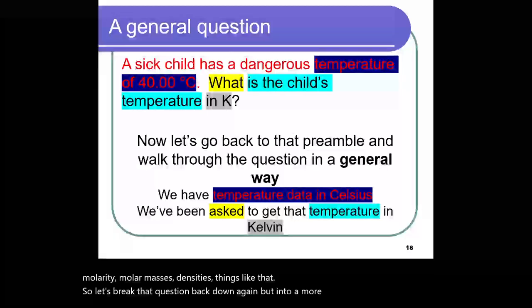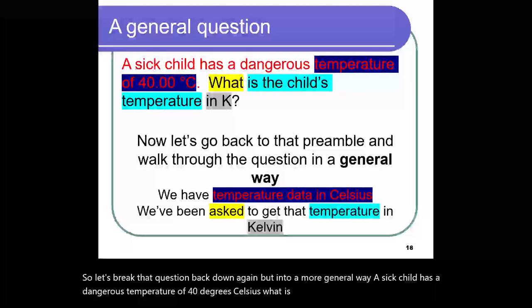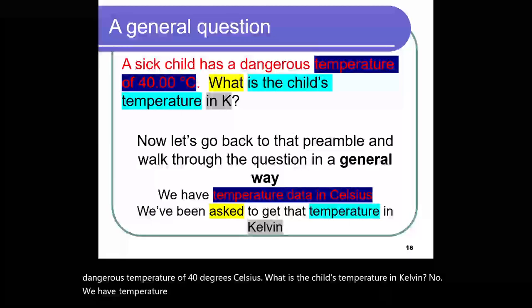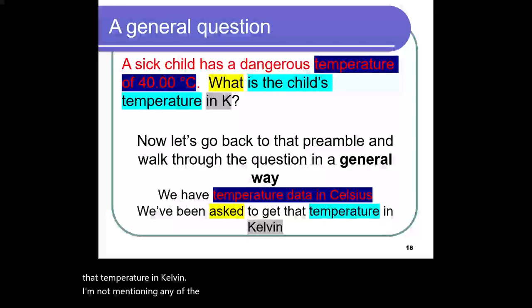So let's break that question back down again but into a more general way. A sick child has a dangerous temperature of 40 degrees Celsius. What is the child's temperature in Kelvin? Now we have temperature data that's been given to us in Celsius, and we've been asked to get that temperature in Kelvin. I'm not mentioning any of the numbers. I've just come up with two sentences to say really what this question is in a general way. Well, that's good for me because that's going to help me build a plan, a plan to solve this question.